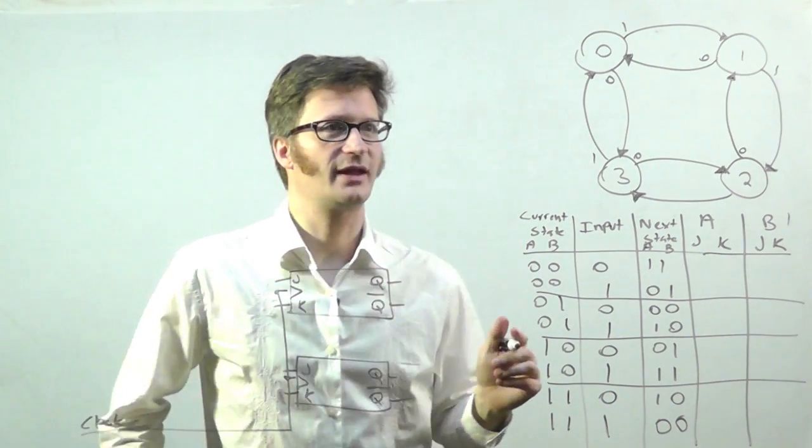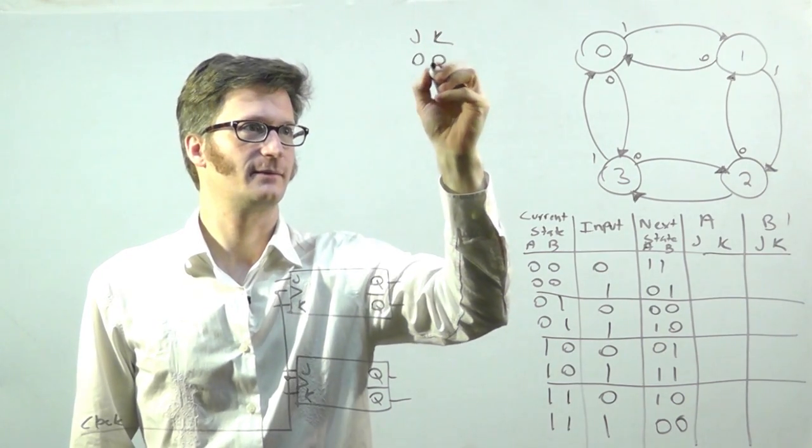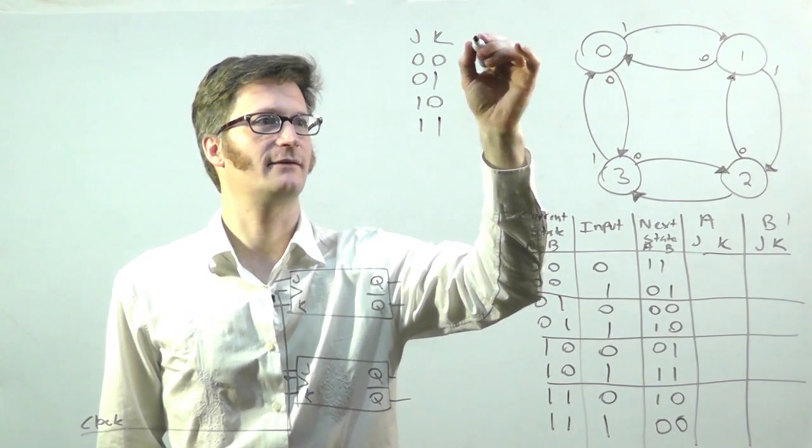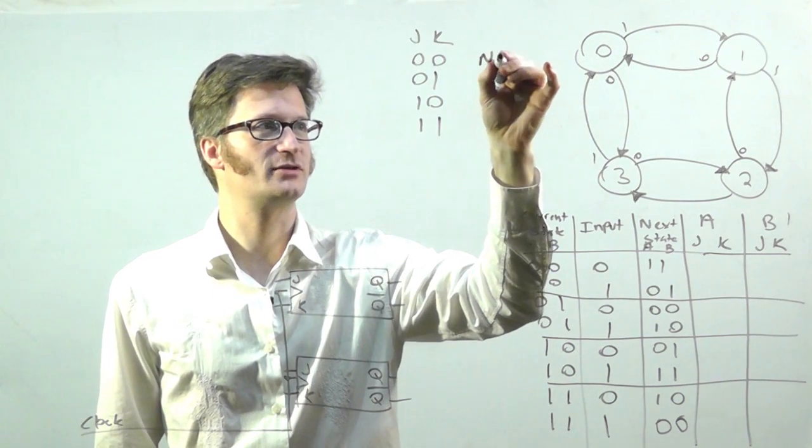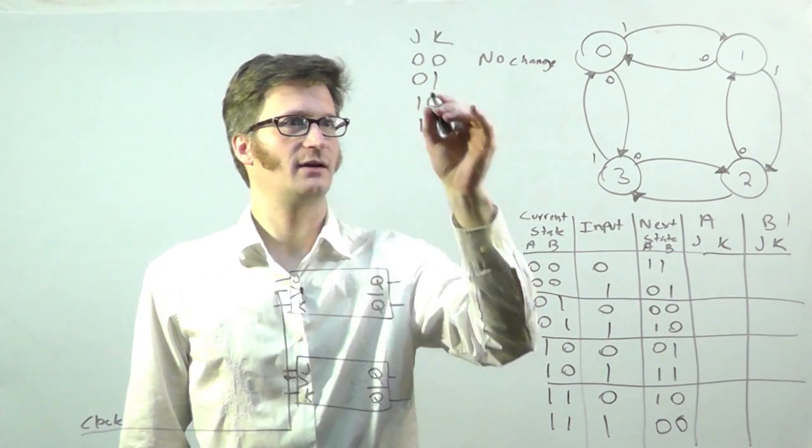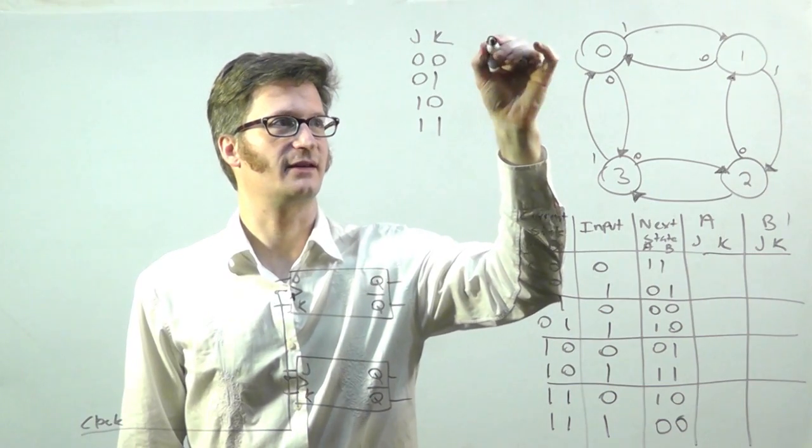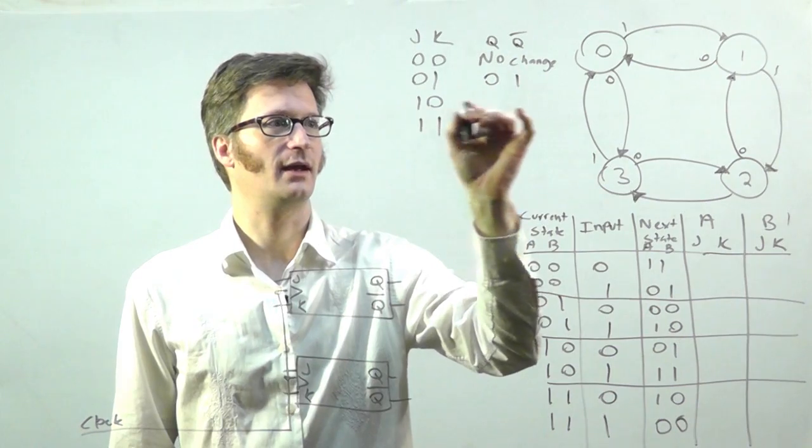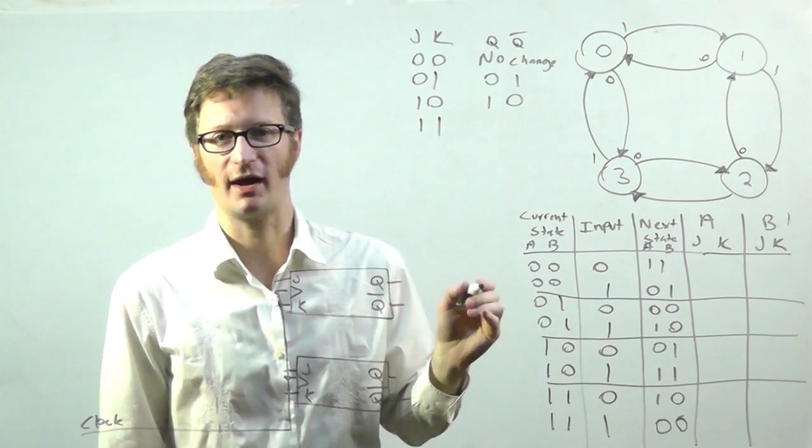The truth table for a JK flip-flop is like this. If J and K are both zero, there's no change. If I have J zero and K one, the output Q and Q bar will be zero, one, and here it's one, zero.